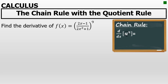In this case our u is a quotient, 2x minus 1 over 2x squared plus 1, to the power of n. In this problem, 9 equals n. The rule says you bring the power to the front, decrease the power by 1, and then multiply by the derivative of u. Since u is a quotient, the derivative of u will require the quotient rule.